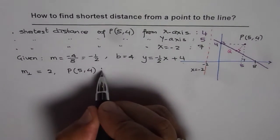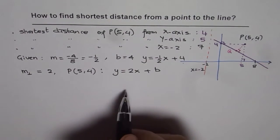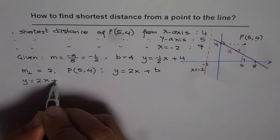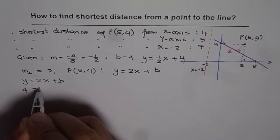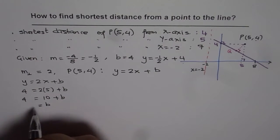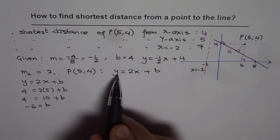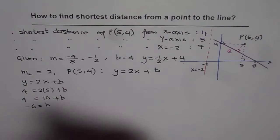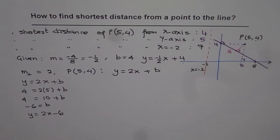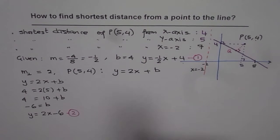The equation of the perpendicular line is y = 2x + b. To find b, we substitute x = 5 and y = 4: we get 4 = 2(5) + b, so 4 = 10 + b, which gives b = −6. Since b is −6, the equation of the perpendicular line joining P and Q is y = 2x − 6.